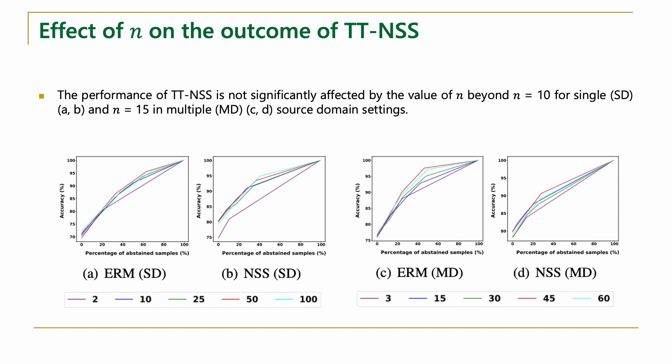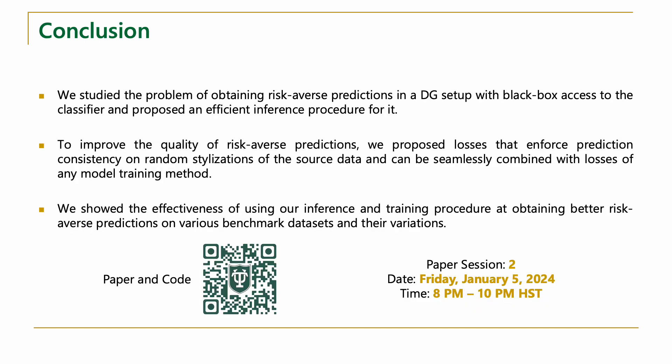The figures show that our inference procedure can work with only a few random restylizations of the test image and hence does not significantly increase computational overhead during inference, making our procedure practically applicable. In conclusion, we studied the problem of obtaining risk-averse predictions from DG classifiers and proposed an inference procedure that only requires black-box access to the classifiers. We also proposed a training procedure to improve the quality of risk-averse predictions and showed the effectiveness of our method on a variety of datasets and models trained with state-of-the-art DG methods. For further details, please check out our paper and stop by our poster. Thank you.